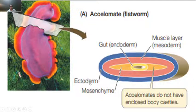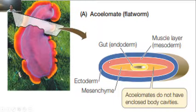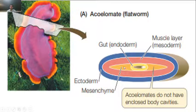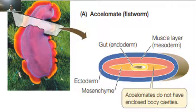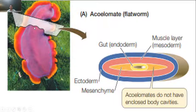We can see in the diagram the external ectoderm shown in blue color, the mesoderm which is the muscle layer shown in pink color, and inside that is the endoderm. There is no body cavity present. This diagram represents a transverse section (TAS) of flatworms, and here there is no body cavity.